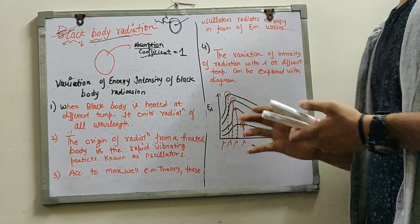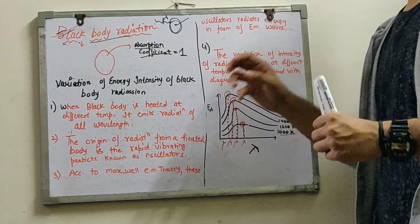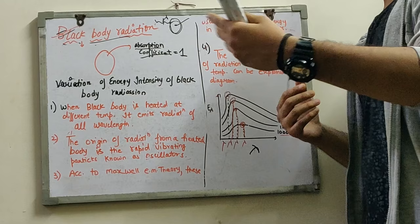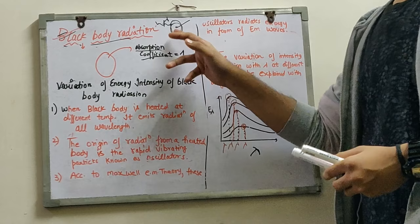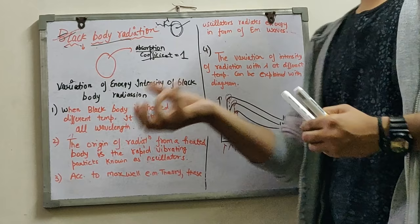Now, a black body is not necessarily black in color. For example, when we wear black clothes, we say it will get very hot — that is because black clothes absorb every wavelength of radiation. So we saw what black body radiation means: a black body absorbs all wavelengths.